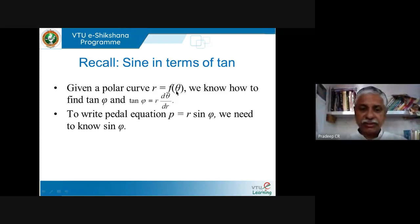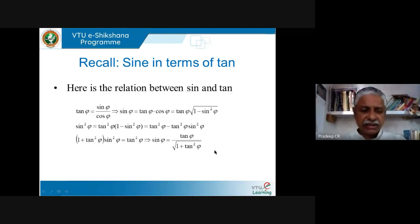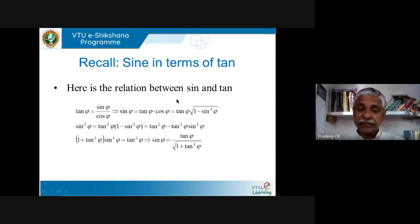Given a polar curve r = f(θ), we know tanφ = r·dθ/dr. To write the pedal equation p = r·sinφ, we need to know sinφ. Here is the standard relation between sinθ and tanθ: tanφ = sinφ/cosφ, which means sinφ = tanφ·cosφ = tanφ·√(1 − sin²φ). Squaring and solving, sinφ = tanφ/√(1 + tan²φ). So I know tanφ and I can find sinφ.